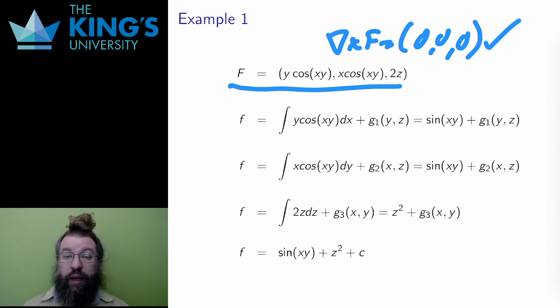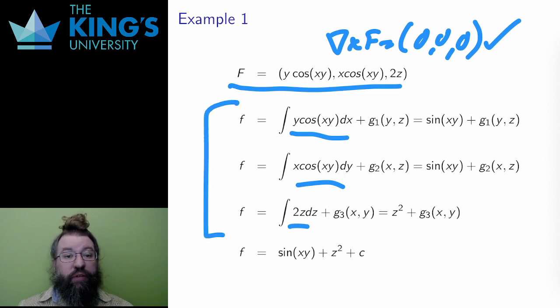To do so, I integrate the first component in x, the second component in y, and the third component in z. Here are those three integrals. The antiderivatives here are pretty reasonable, sin xy for the first two, and z squared for the last. But then there are all these constants of integration, these functions g1, g2, g3. I need to match all three of these up. Can I make a single function from these three descriptions?